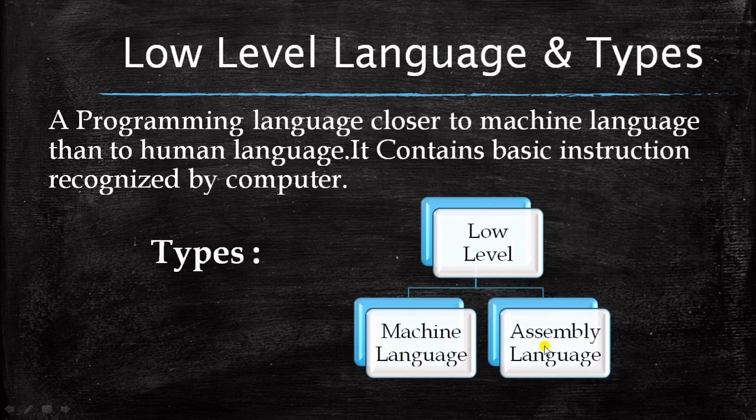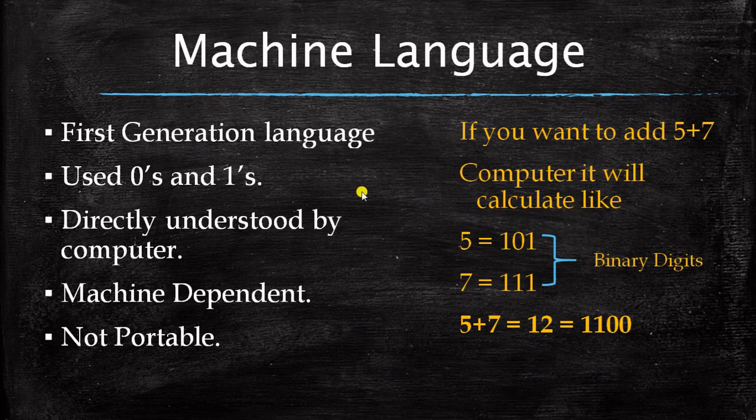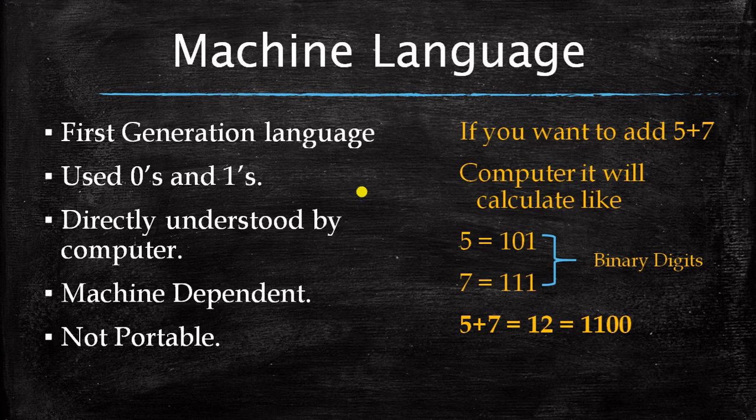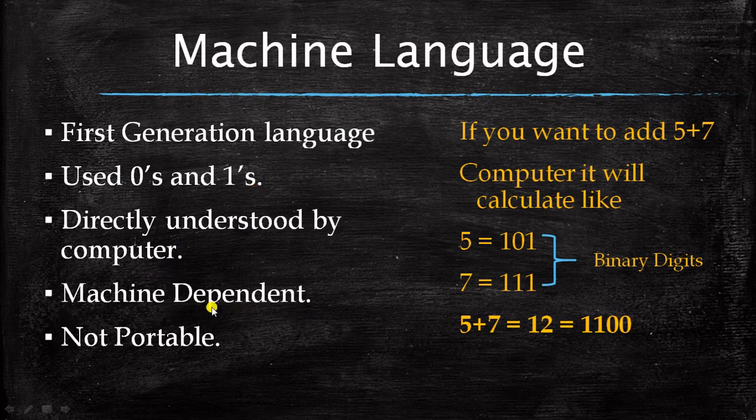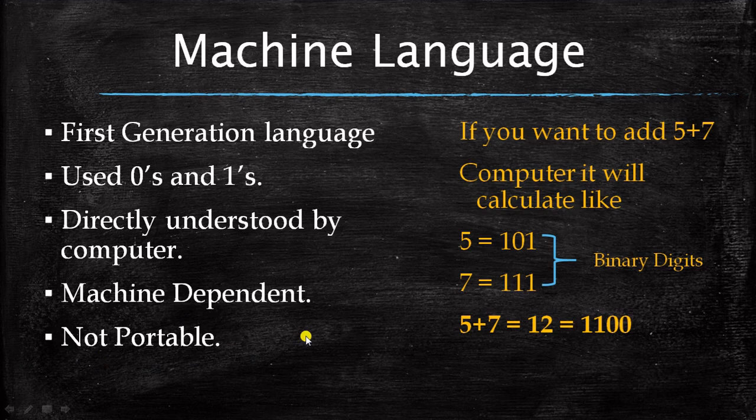It is a first generation language. If you remember we had five generations. In each generation the programmers used different types of languages. In the first generation they used machine language and assembly language. Those were low level languages. So what is special about machine level language? It is a first generation language. It is made up of zeros and ones. It is directly understood by the computer. Because computer understands only zero and one. So it is being understood by it directly. It's a machine dependent. Machine dependent means it's not platform independent. Means if you transfer it from one machine to another, there will be certain problem into it. It's not portable. So you cannot just transfer it.